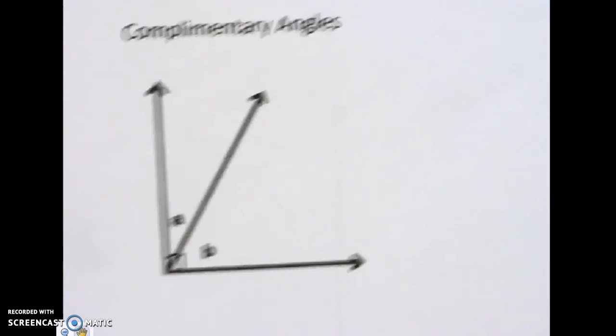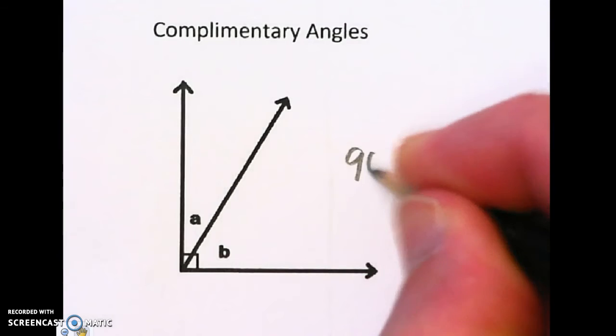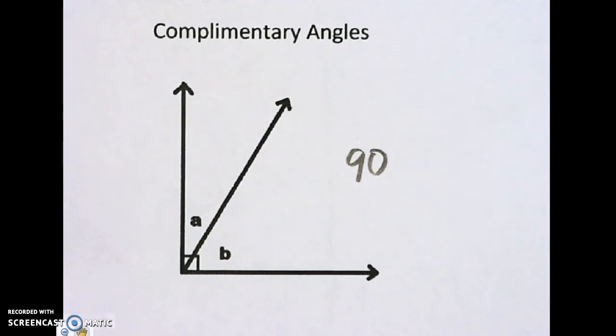Another one is complementary. Two complementary angles add to 90 degrees. If you have one, you can find the other by subtracting it from 90.